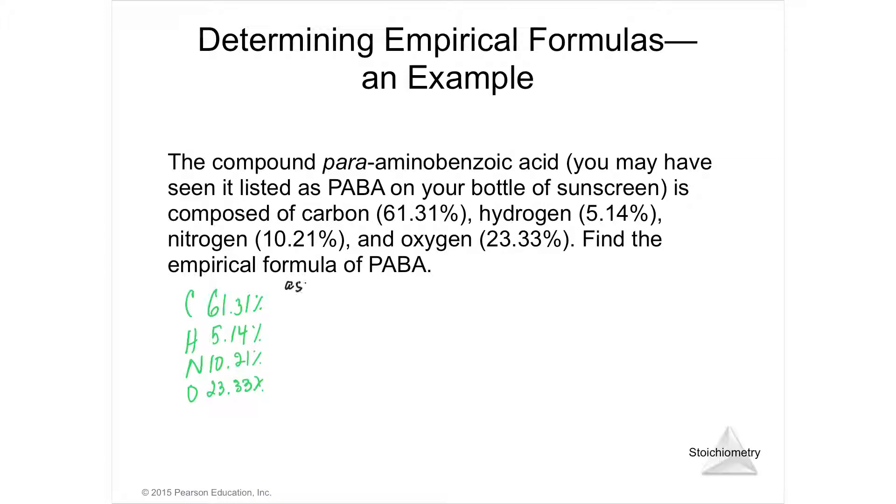So I'm going to assume 100 grams. And that turns this into 61.31 grams of carbon, 5.14 grams of hydrogen, 10.21 grams of nitrogen, and 23.33 grams of oxygen. If I want to know the formula, which is a ratio, I need numbers.